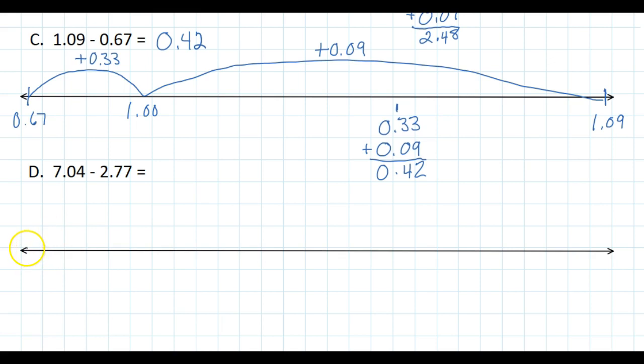Let's go on to the next one. Again, the smallest one - the small decimal number is 2.77 - and the large number is 7.04.